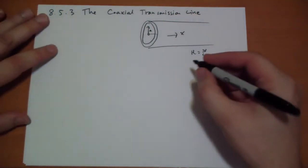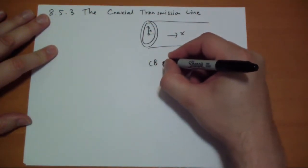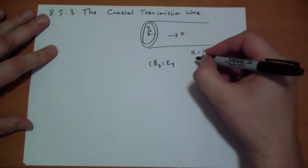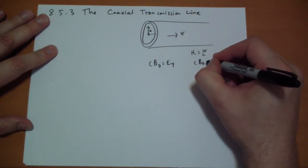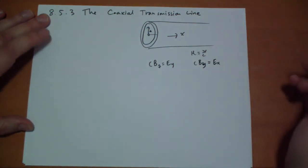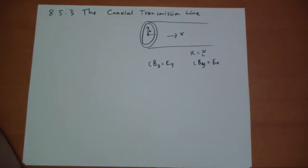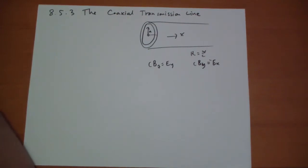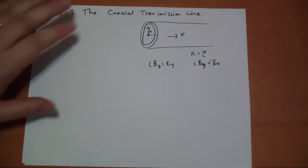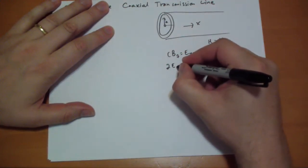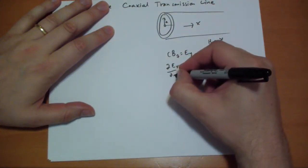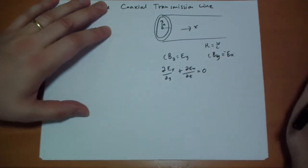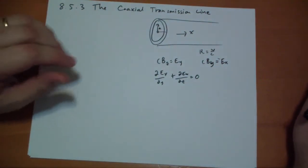When we plug this all in, we get basically C times the z-component of the B-field is equal to the y-component of the E-field. And conversely, C times the B-component of the y-field is equal to E's x-component, minus, because we want to make everybody happy. And so we plug in the equations. We get that dEy by dy plus dEz by dz is equal to zero. That's just the divergence of the electric field has to be equal to zero.